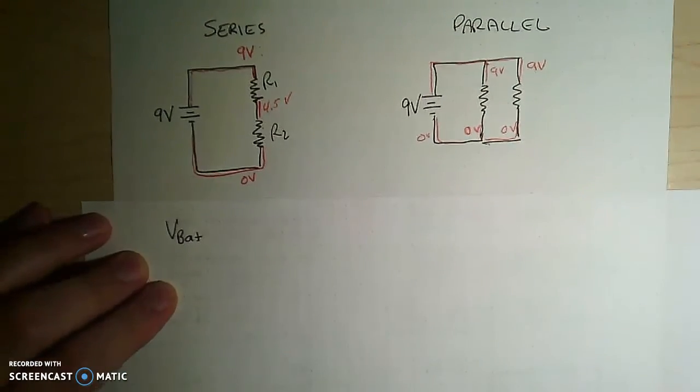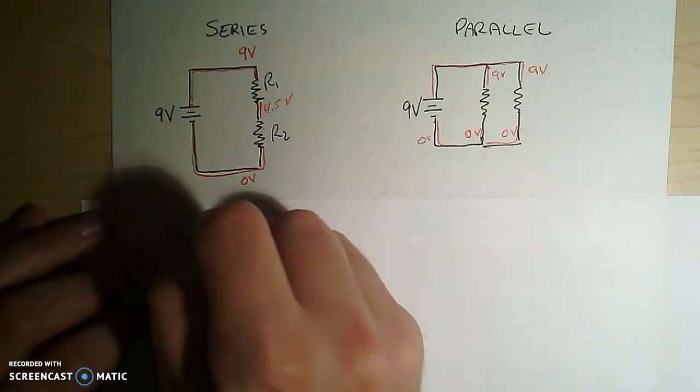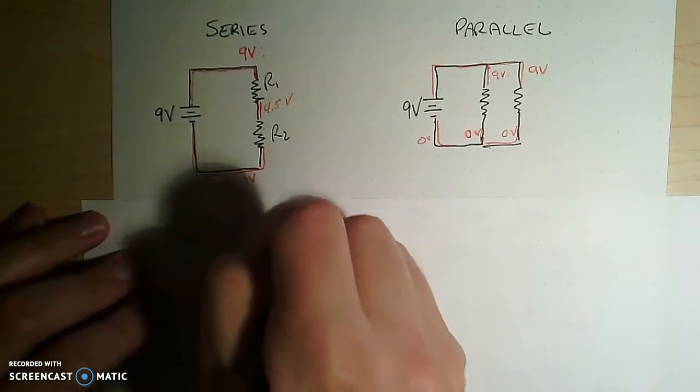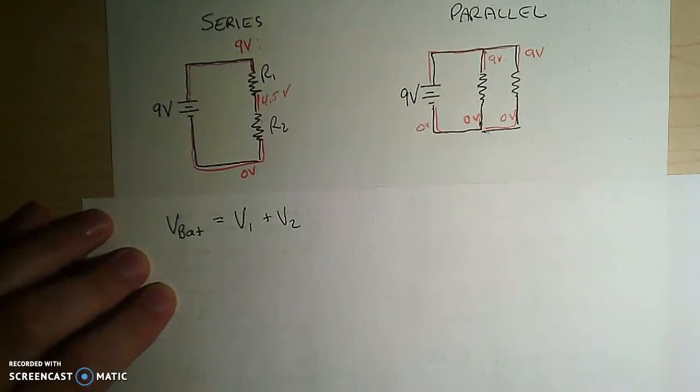So if I call this resistor 1 and resistor 2, I can say that the potential of the battery has to be equal to the potential of resistor 1 plus the potential of resistor 2, right?